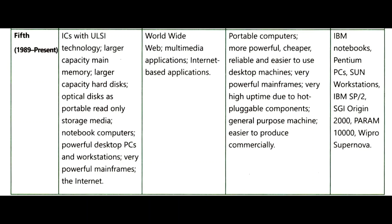The time period of fifth generation computers is from 1989 till present. Components include ICs with ULSI technology, larger capacity main memory, larger capacity hard disk, and optical disk. Software used includes the World Wide Web, multimedia applications, and internet-based applications. Features include portable computers that are more powerful, cheaper, reliable, and easy to use. Examples are IBM notebooks, Pentium PCs, Sun workstations, and SGI Origin.